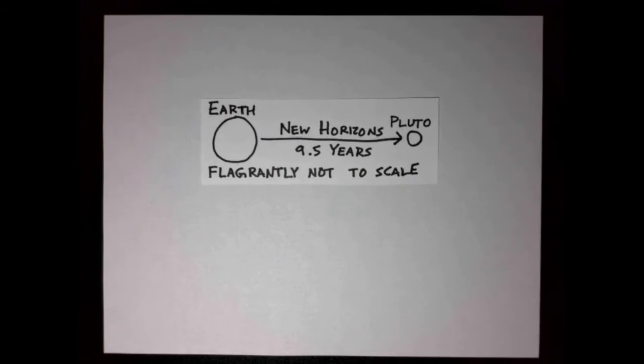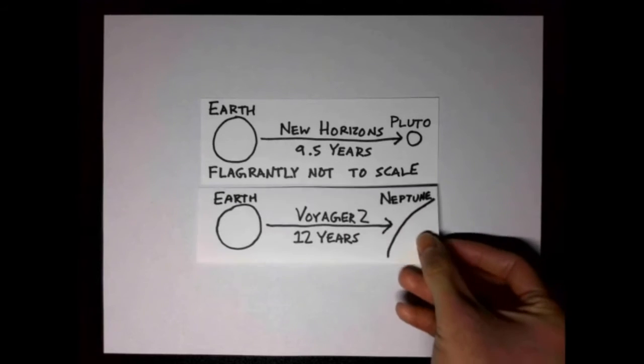Seven months before the IAU downgraded Pluto, NASA launched a probe named New Horizons intended for the exploration of Pluto. It took New Horizons 9 and a half years to make it to Pluto, which may seem like a long time, but remember, Pluto is really far out. Consider for comparison that Voyager 2 took 12 years to make it to Neptune.